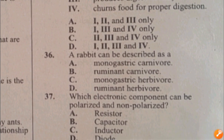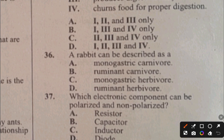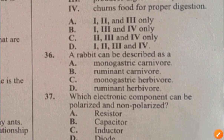Question 36. A rabbit can be: A. Monogastric carnivore, B. Ruminant carnivore, C. Monogastric herbivore, D. Ruminant herbivore. A rabbit is a monogastric herbivore because it has just one stomach compartment and it eats greens. The answer to question 36 is C, monogastric herbivore.